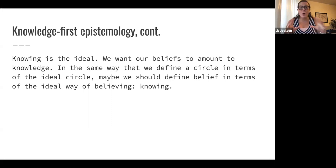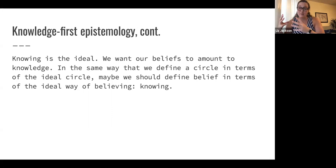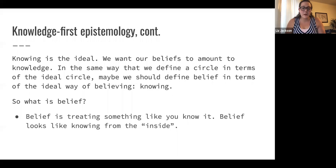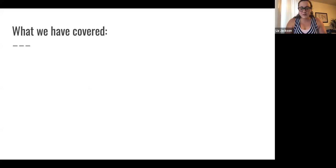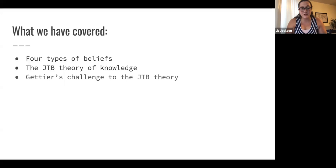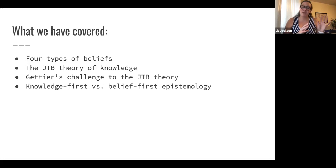Why think this? One thought is that knowing is sort of an ideal — we want our beliefs to amount to knowledge. In the same way that we understand a circle because it resembles the ideal geometric figure, maybe we should define belief in terms of the ideal way of believing, which is knowing. On this view, Williamson says belief is treating something like you know it — belief is something that looks like knowledge from the inside. Knowledge-first epistemology can also tell us what makes belief rational: that's knowing. Belief aims at knowing. Today we covered the four types of beliefs, the justified true belief theory of knowledge, Gettier's challenge, and the debate between knowledge-first and belief-first epistemology.